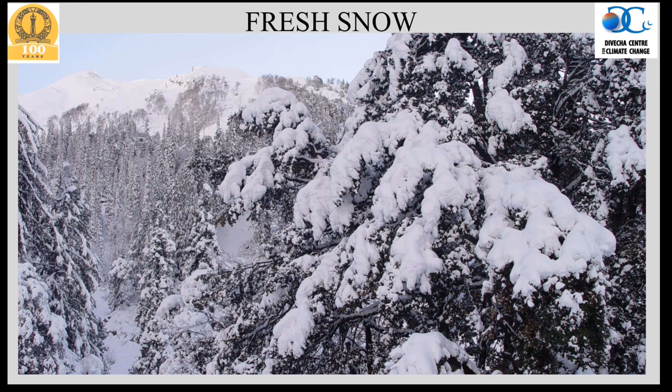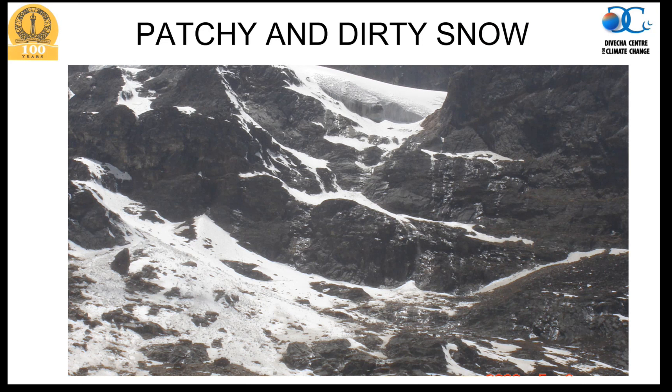Before going into the spectral reflectance characteristics of snow and ice — which help us understand various types of snow and ice — it is important to understand how they look. This picture shows snow that has fallen on the ground immediately after fresh snowfall. Snow is extremely white compared to other land features, particularly vegetation on which the snow cover is lying.